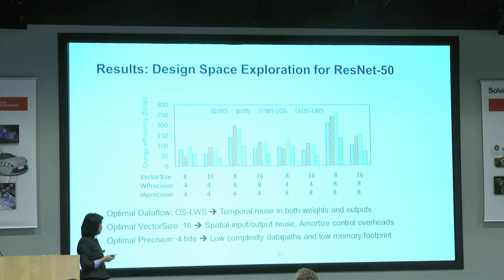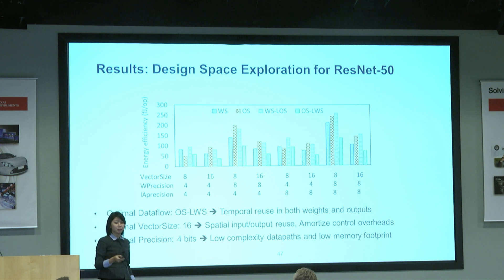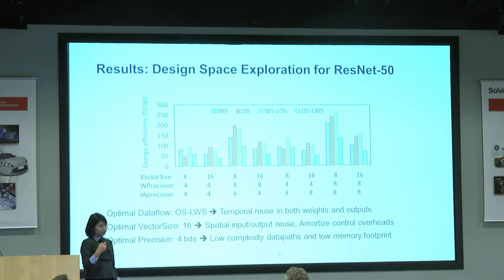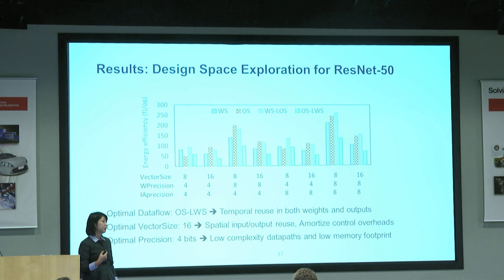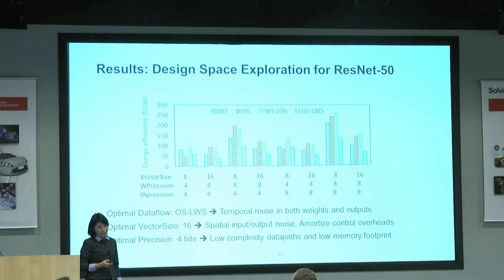Precision is an obvious one — the lower the precision, the better. With today's quantization, 4-bit is actually pretty achievable with at least the ImageNet dataset, so 4-bit is pretty comfortable from the hardware design point of view as well.